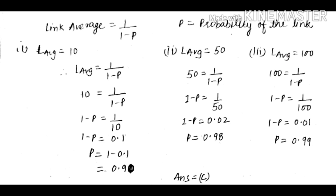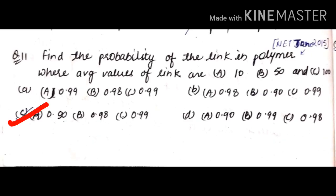Checking which option matches these values: first gives p = 0.90, second gives p = 0.98, and third gives p = 0.99. So C is the correct answer, where a gives p = 0.90, b gives p = 0.98, and c gives p = 0.99.